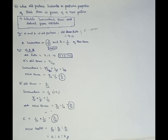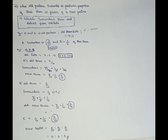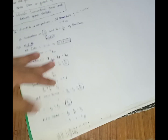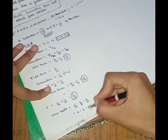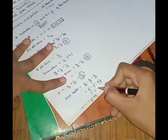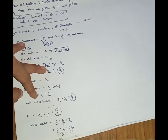In the third case, C's share is calculated as the sum of what A and B surrendered: 1 by 10 plus 1 by 10 equals 2 by 10. So the new ratio is 6 by 10 is to 2 by 10 is to 2 by 10. Simplifying: 6 is to 2 is to 2, which further simplifies to 3 is to 1 is to 1.